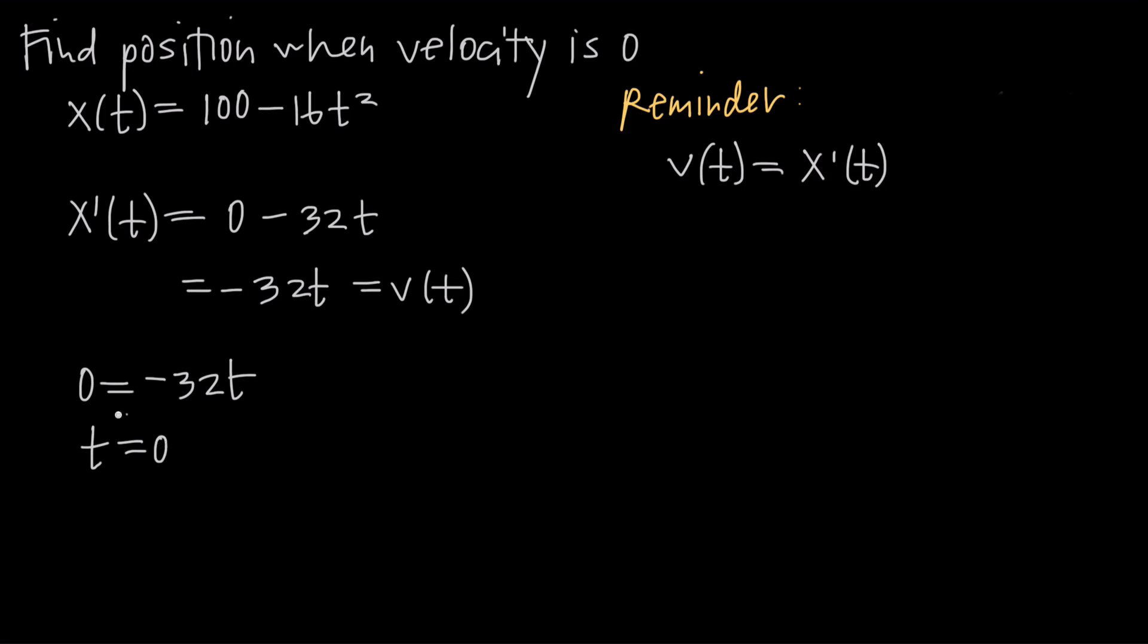So what that tells us is that at time equal to 0, or when we're first starting the clock, when we first start that stopwatch at t equals 0 initial time, that's when the velocity is going to be 0. So we want to take this value of t then and plug it back into the position function, because remember we were asked to find position when velocity is 0. So t equals 0 is the point in time at which velocity is going to be 0. So now we want to take that same time, plug it into the position function so we can find the position of the object at that point in time.